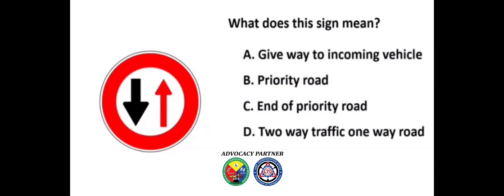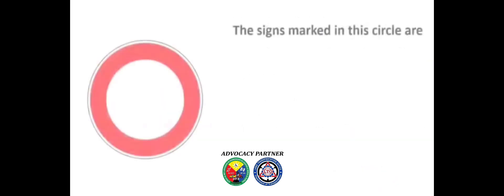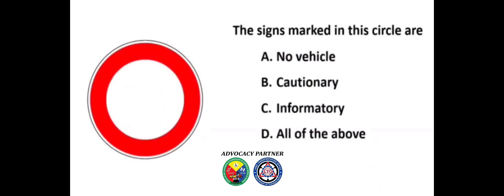Answer: B) Priority road. The signs marked in this circle are: A) No vehicle, B) Cautionary, C) Informatory, D) All of the above. Answer: A) No vehicle.